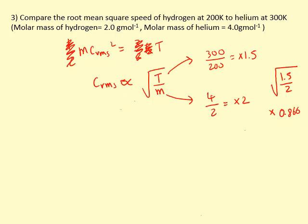We need to give a clear conclusion. The crms of helium is 0.866 times the crms of hydrogen.